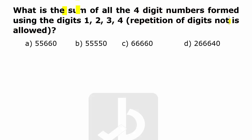So dear students, as I said, we need to find out the sum of the digits. We have a small formula: sum equals (n minus 1) factorial into 1111 n times into sum of digits.